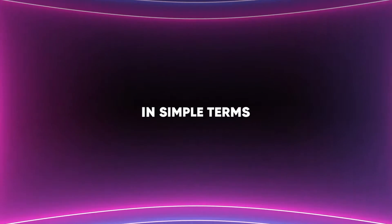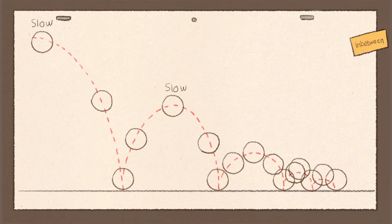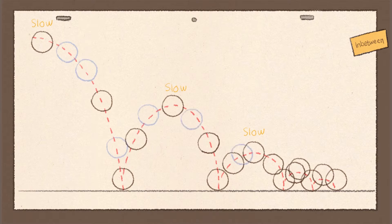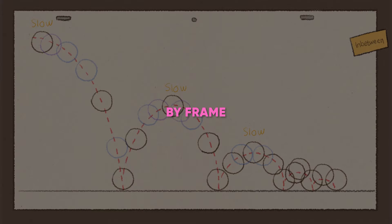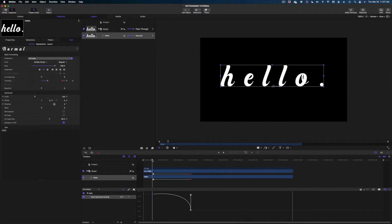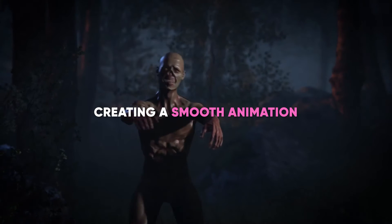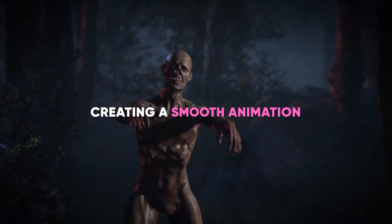In simple terms, imagine you're creating an animation of a bouncing ball. You would manually create the keyframes — the ball at the highest point of its bounce and the ball when it hits the ground. The frames in between, the ball rising and falling, would need to be filled in manually, frame by frame. But with Keyframer AI, you only need to create those two keyframes, and the AI will fill in the rest, creating a smooth animation.